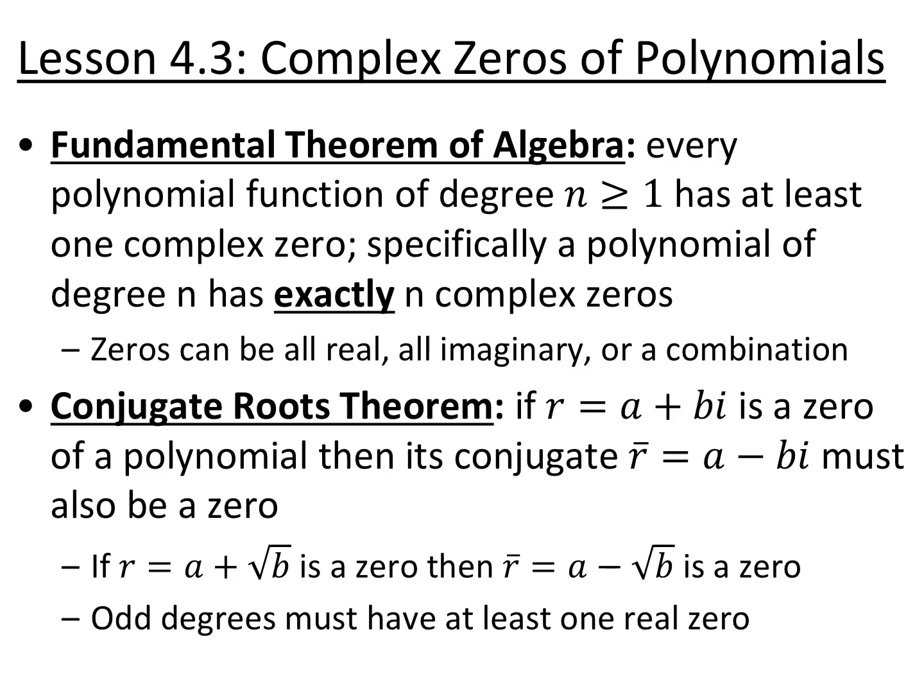Lesson 4.3 is complex zeros of polynomials. The fundamental theorem of algebra says that every polynomial function of degree at least one has at least one complex zero. More specifically, a polynomial of degree n has exactly n complex zeros. Although we normally think of imaginary numbers as complex numbers, real numbers are also complex numbers as well. So complex encompasses everything. Zeros could be all real, all imaginary, or a combination of the two.